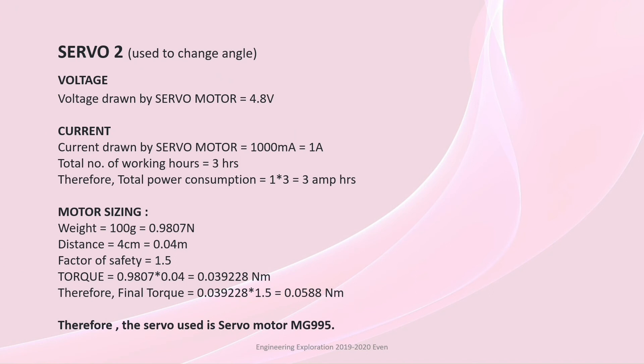Servo 2 is used to change angle. Voltage drawn is 4.8V, Current 1A. It works for 3 hours. Power consumption is 3A. The total torque is 0.0588Nm and the servo required is MG995.